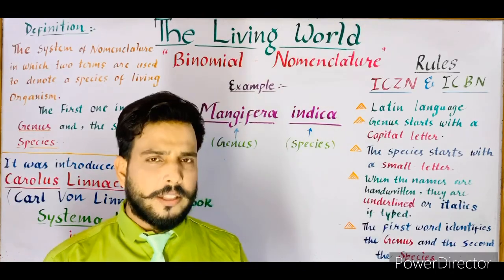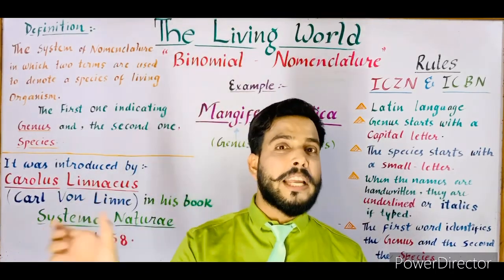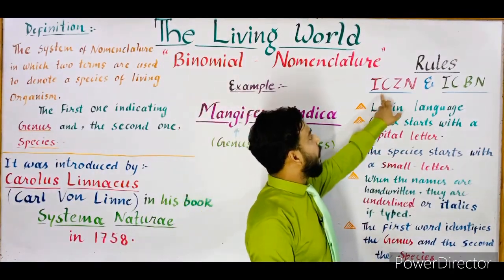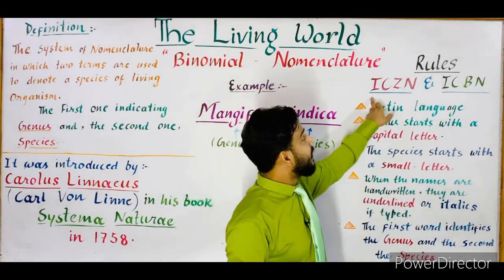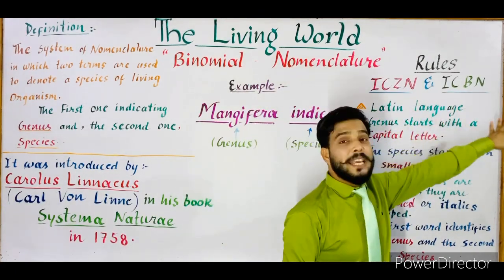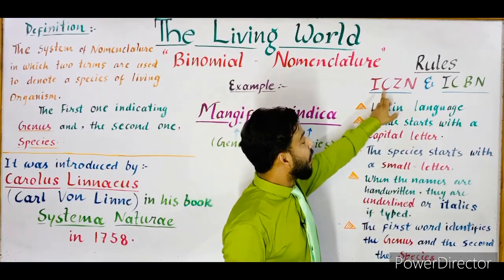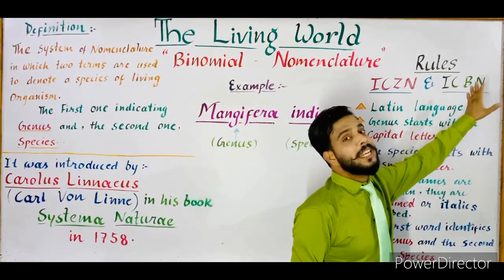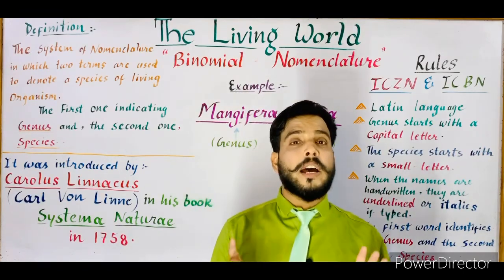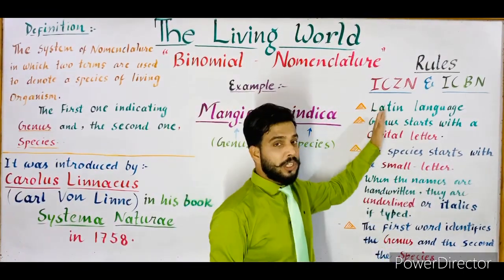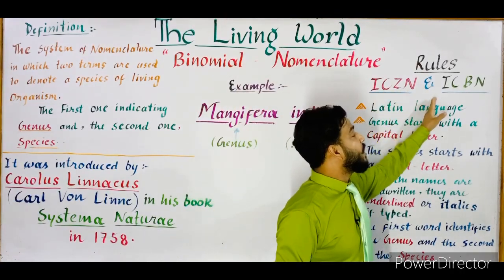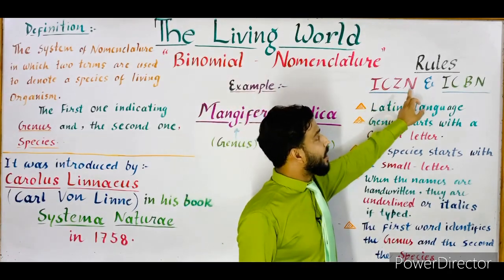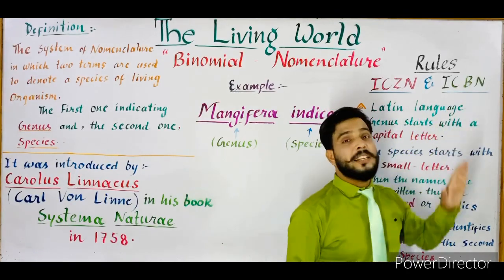Now there are some rules to write a scientific name according to binomial nomenclature. These rules are proposed by two important bodies: ICZN and ICBN. ICZN stands for International Code for Zoological Nomenclature, and ICBN stands for International Code for Botanical Nomenclature. These two names are very important and questions about their full forms are frequently asked in examinations.